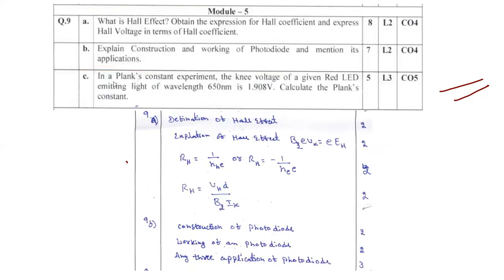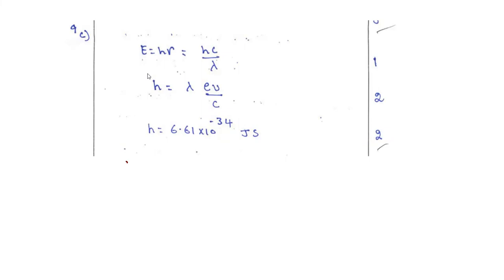Question 9c is a numerical example on Planck's constant. In a Planck's constant experiment, the knee voltage of a red LED emitting light of wavelength λ = 650 nm (650 × 10⁻⁹ m) is 1.08 V. Calculate Planck's constant. This is a simple plus-two level question worth five marks. Using E = hν and ν = c/λ, you can isolate h = λ·eV/c. The final answer is h = 6.61 × 10⁻³⁴ J·s.